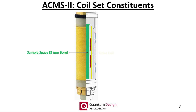The drive coil, shown in yellow, provides the necessary AC drive field with frequencies spanning 10 to 10,000 Hz and amplitudes as large as 15 Oe. The drive coil is long in order to provide as uniform an excitation as possible. Not explicitly shown is the counter-wound compensation coil, which resides outside of the AC drive coil and is wound in series with it. The compensation coil minimizes the AC drive field outside of the coil set to minimize interactions with the nearby sample chamber.